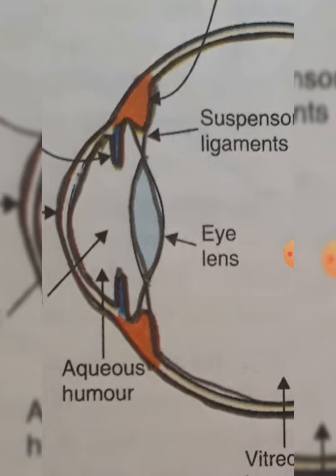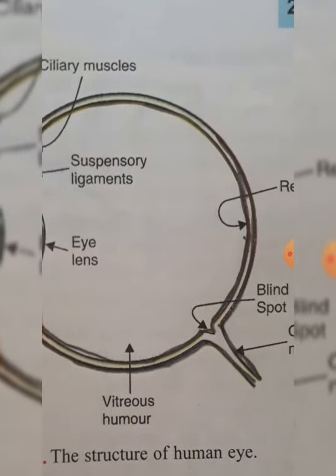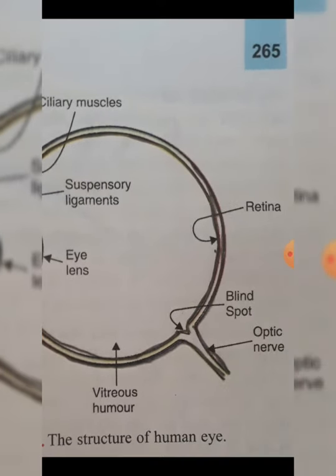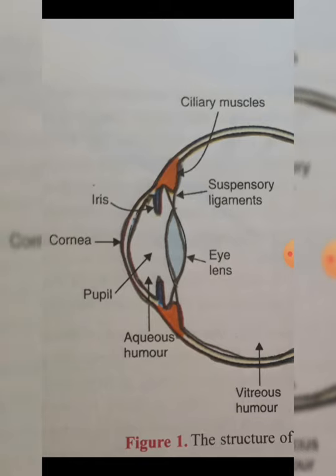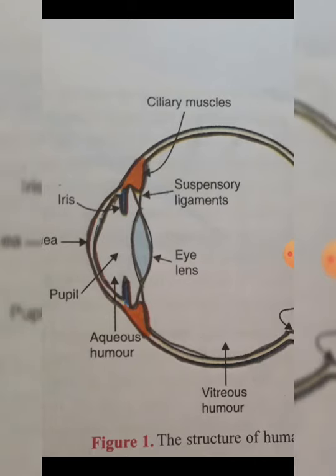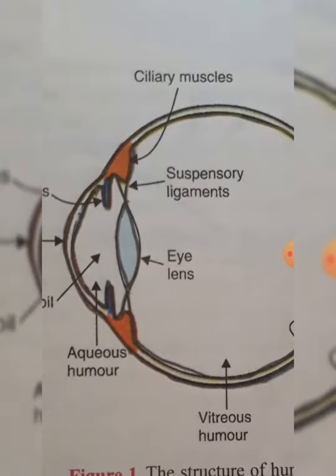The convex eye lens converges the light rays and produces a real and inverted image of the object on the retina. The outer surface of the cornea also acts as a convex lens because it is bulging and transparent, so it converges most of the light rays entering the eye. Final convergence is then done by the eye lens to focus the image exactly on the retina.